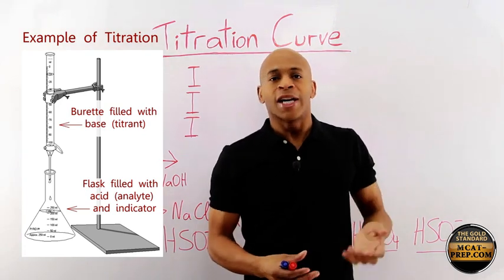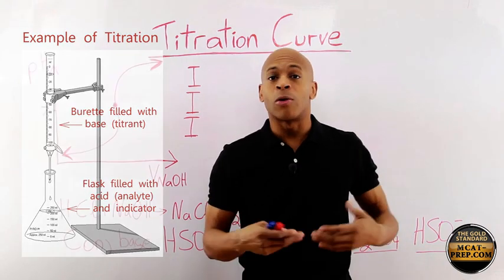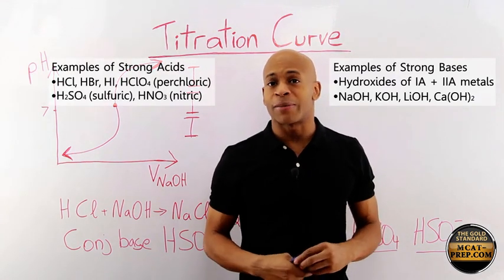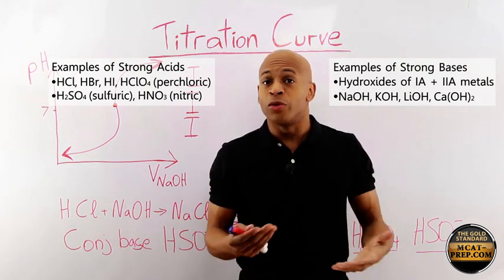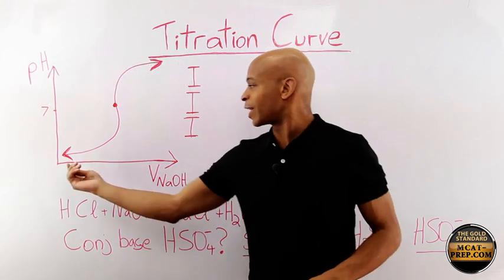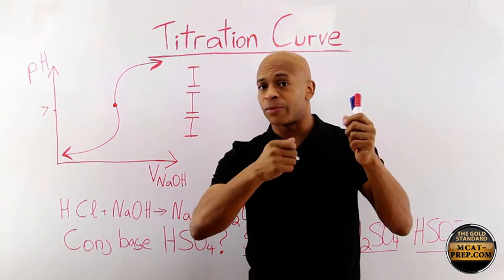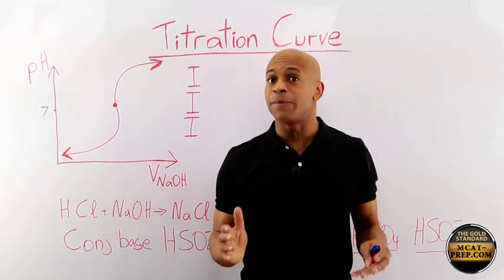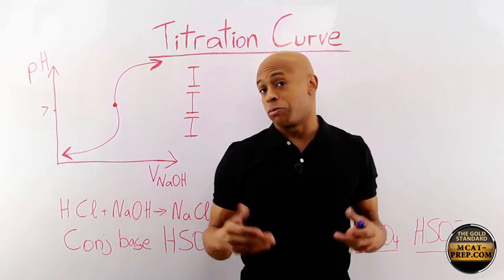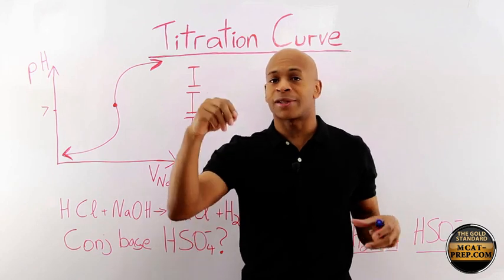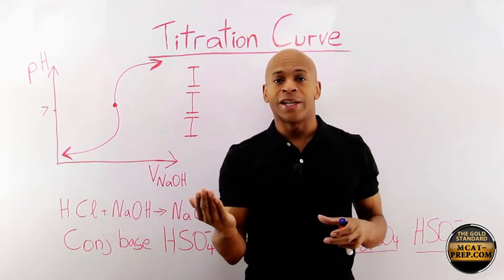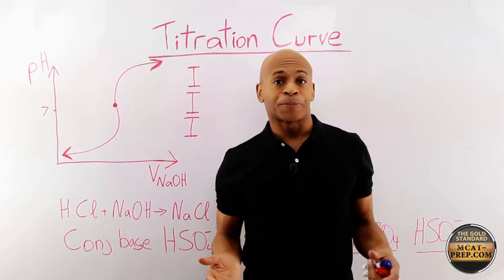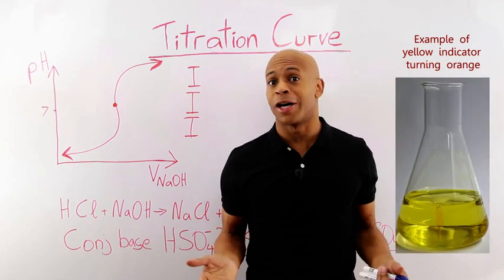In titration, a strong base like sodium hydroxide is often used, and you can do a titration with a weak acid or a strong acid. We'll start by looking at a strong base–strong acid titration. As you're doing the titration, you plot the volume of NaOH versus the pH. To know the pH, it's great to have a pH meter — an instrument you insert into the liquid to read the exact pH at each moment, allowing you to plot your titration curve.